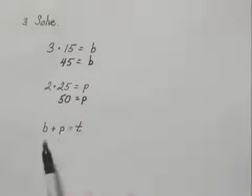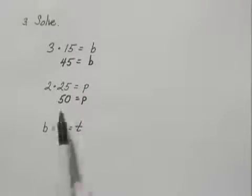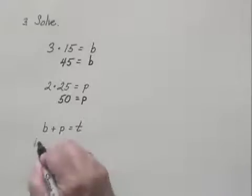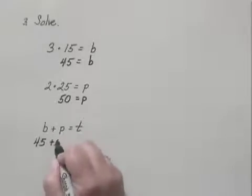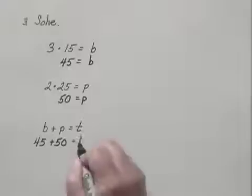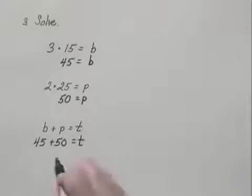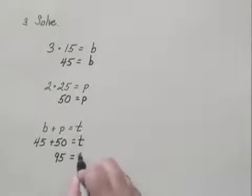And then for the final one, we now know B and P. So we can substitute 45 for B, and 50 for P, and that equals T. 45 plus 50 is 95, so 95 equals T.